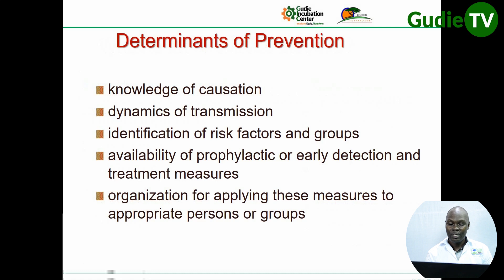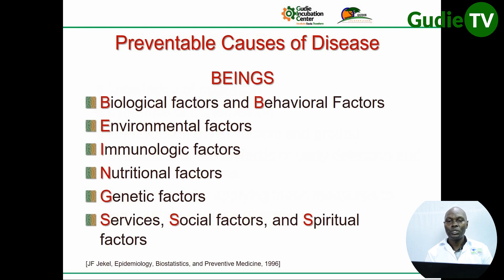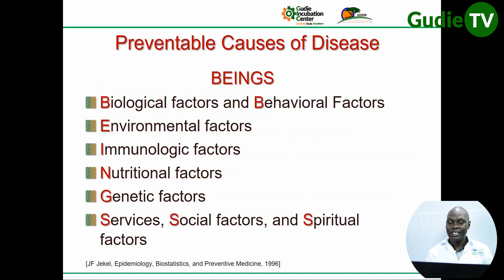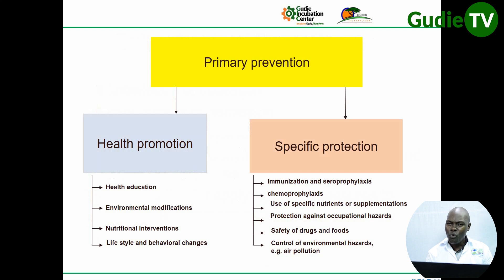There is a framework called the preventable causes of disease, abbreviated as BEINGS. BEINGS stands for: Biological factors, Environmental factors, Behavioral factors, Nutritional factors, Genetic factors, Services, Social factors, and Spiritual factors. We now want to look closely at primary prevention, as most healthcare challenges start at that level.